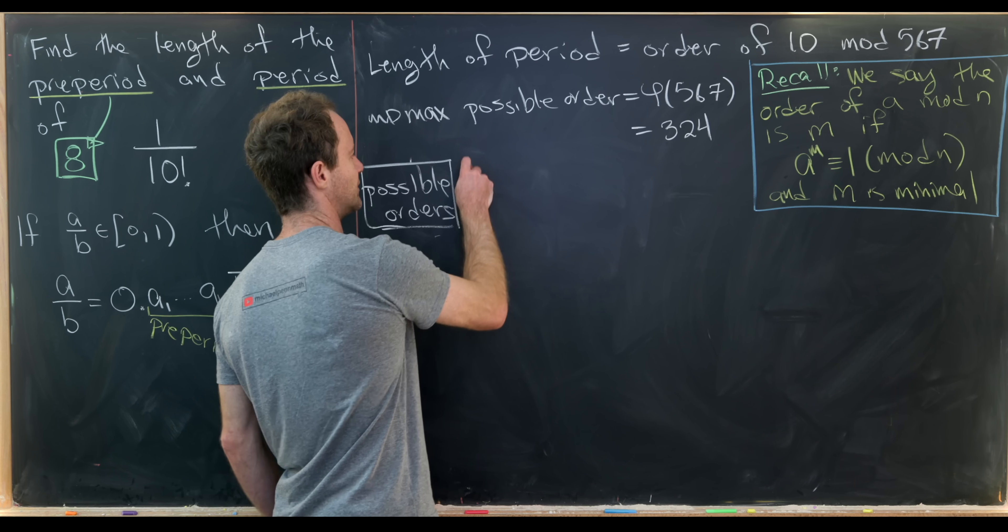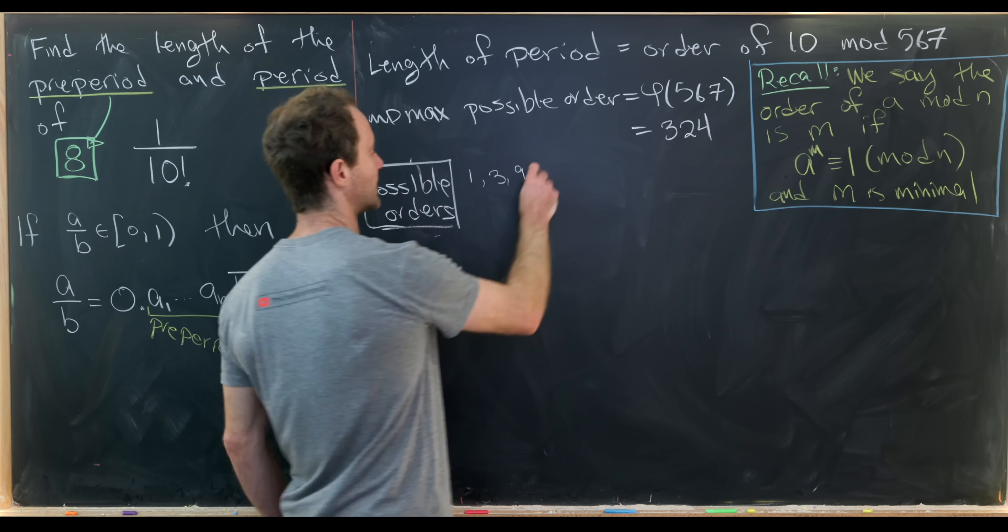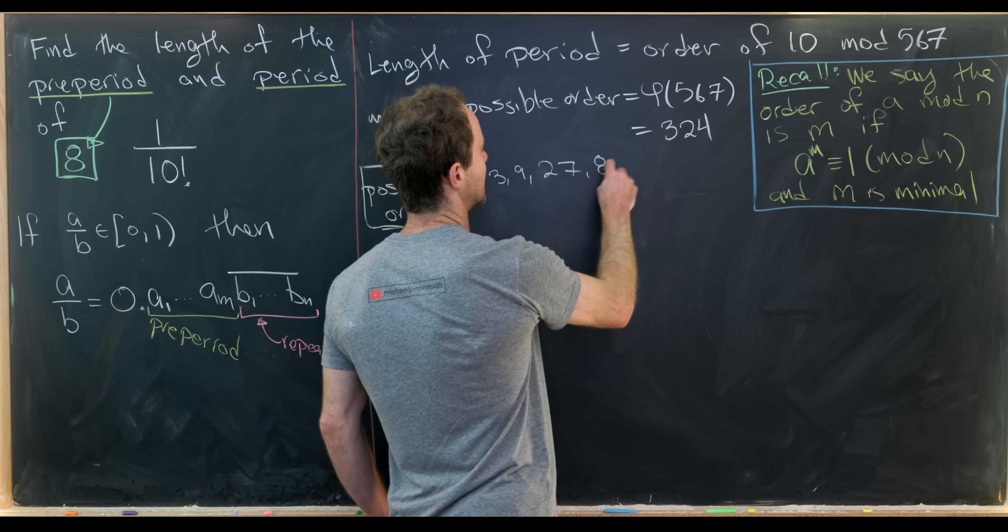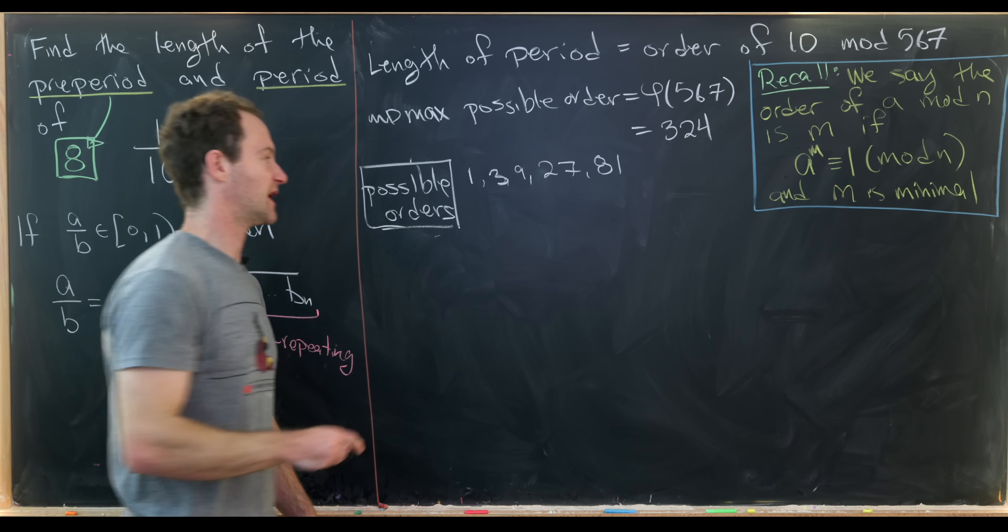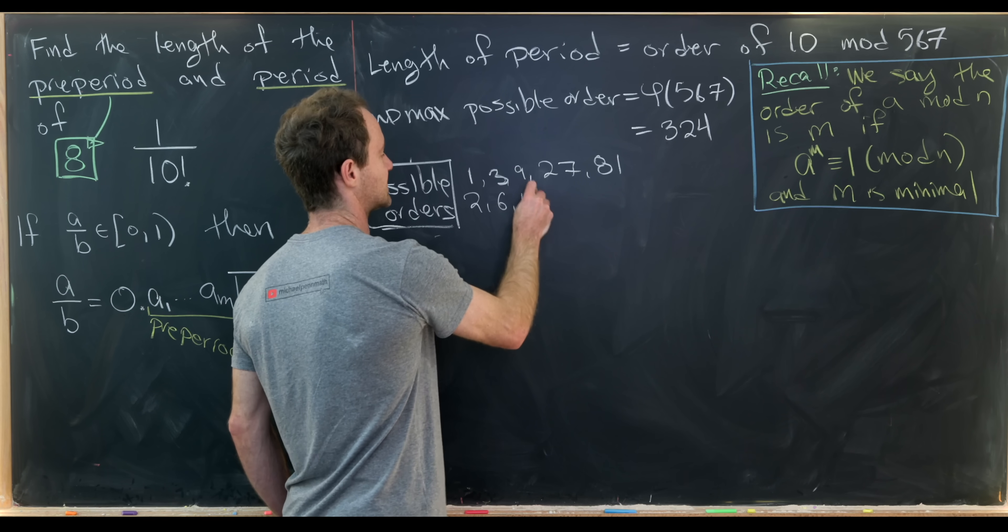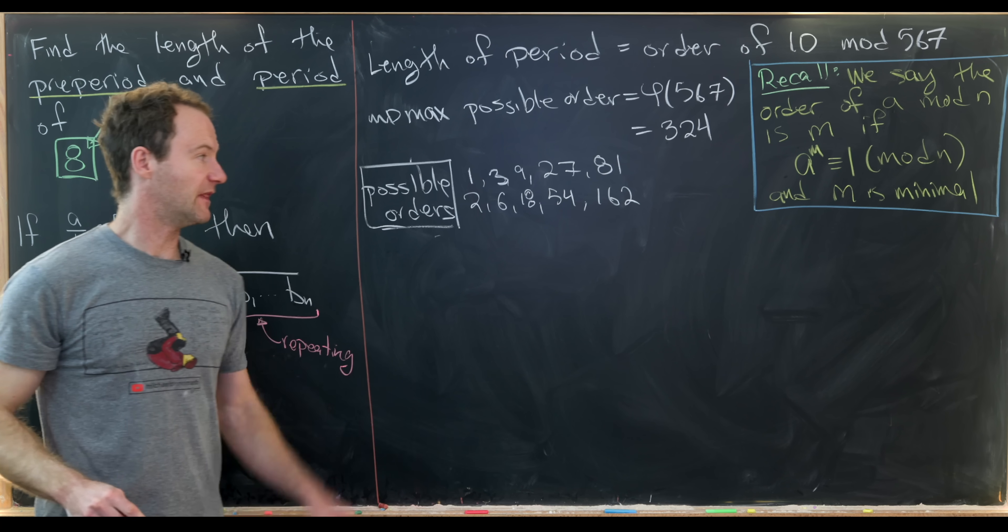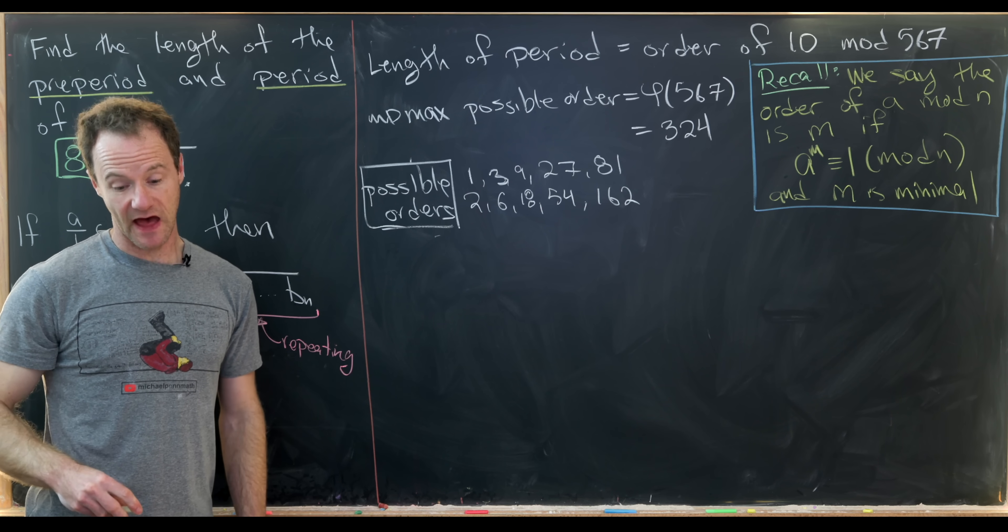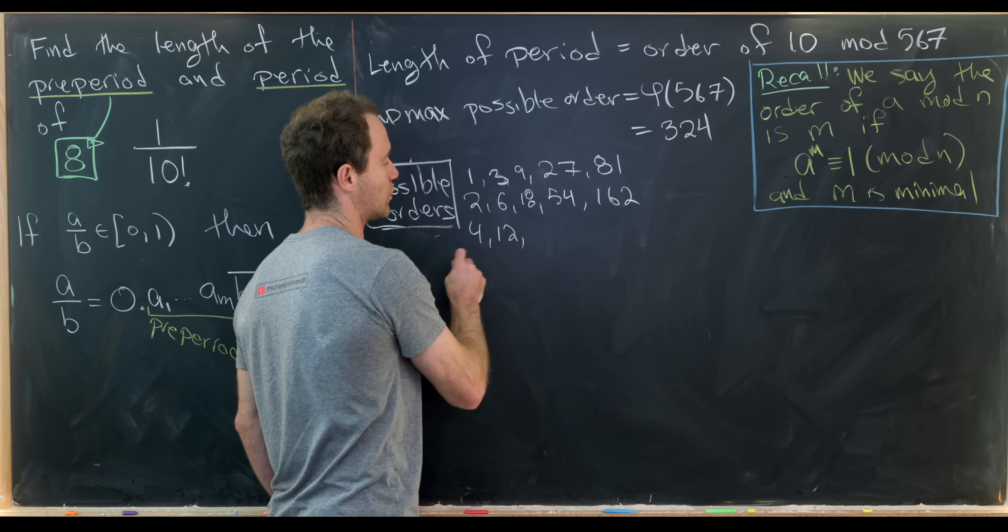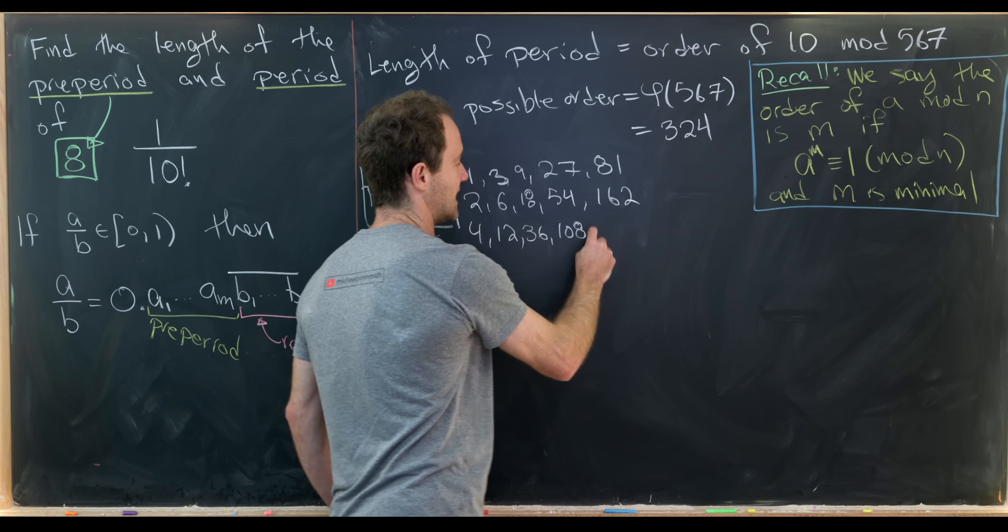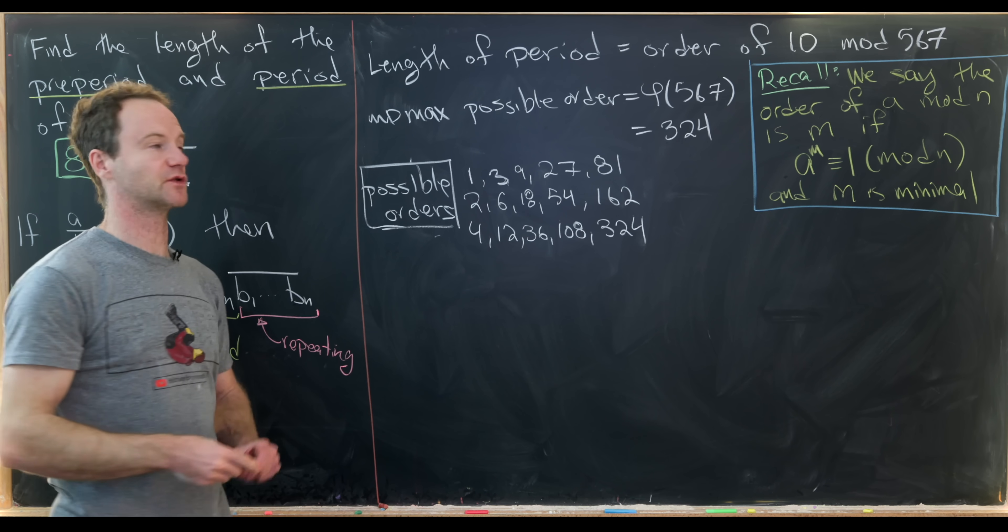Okay, so all of the odd divisors would be 1 and then we'll have 3 and then we'll have 9 and then we'll have 27 and then we'll have 81. And then we'll get divisors built off of that by multiplying each of those by 2. So that'll be 2, 6, 18, 54, and 162. And then finally divisors built on that by multiplying everything by 2 again. So that'll be 4, 12, 36, 108, and 324. And those are all of the possible divisors of 324.